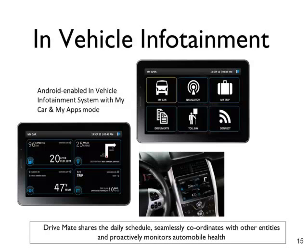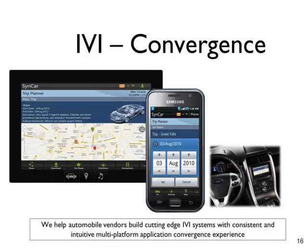The IVI system ensures a converged app experience across all user devices. The Android-enabled in-vehicle infotainment solution can be uniquely empowered for seamless synchronization with the user's home smart TV, smartphone, tablet, and laptop. Applications such as TripPlanner can be developed to offer a converged experience to the end user across all smart devices. A private cloud acting as a user data hub helps maintain point-in-time updated data on all devices.